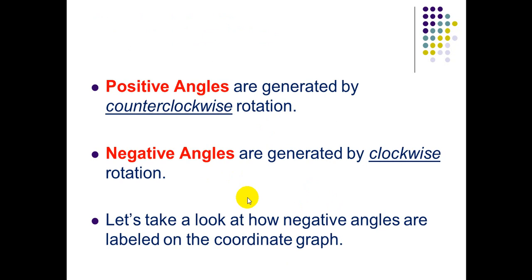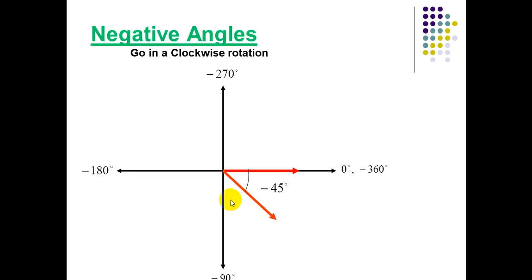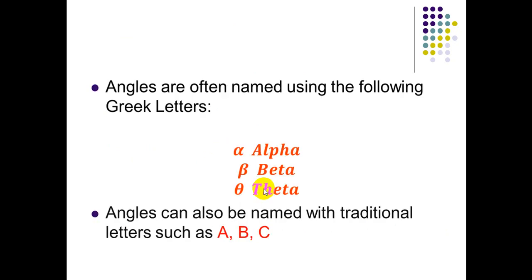The difference between positive angles and negative angles: positive angles are generated by counterclockwise rotation, and negative angles are generated by clockwise rotation. For example, negative 45°: as shown in the figure, we rotate clockwise from the initial side. Angles are often named using Greek letters such as alpha, beta, and theta, and can also be named by traditional letters like A, B, C.